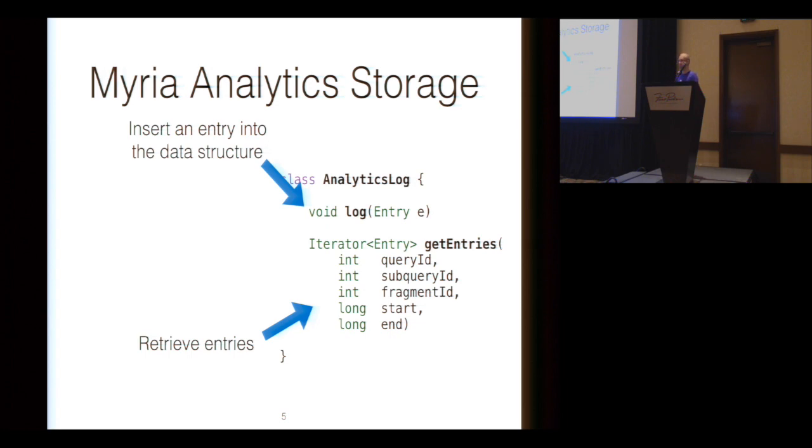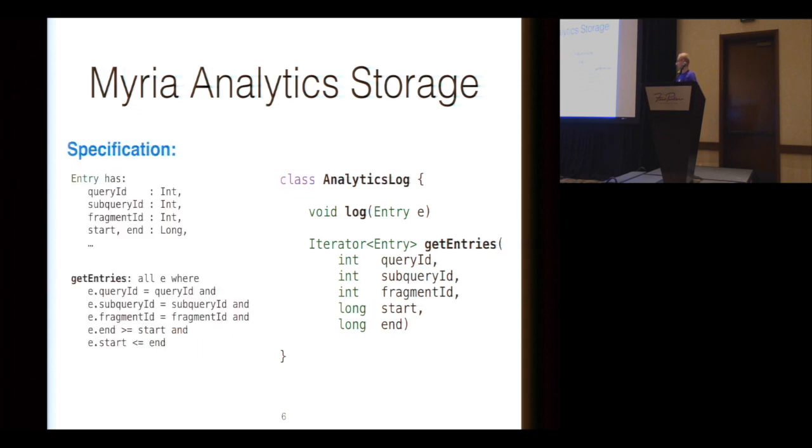The implementation for this data structure is rather complicated, but the Cozy specification is actually not much larger than the interface alone. This is a Cozy specification I've written here. You specify what you want to store in the collection. In this case, it has a fragment ID and a start and end time, and when you're looking for entries where the fragment IDs match up and the entry falls within the time span.